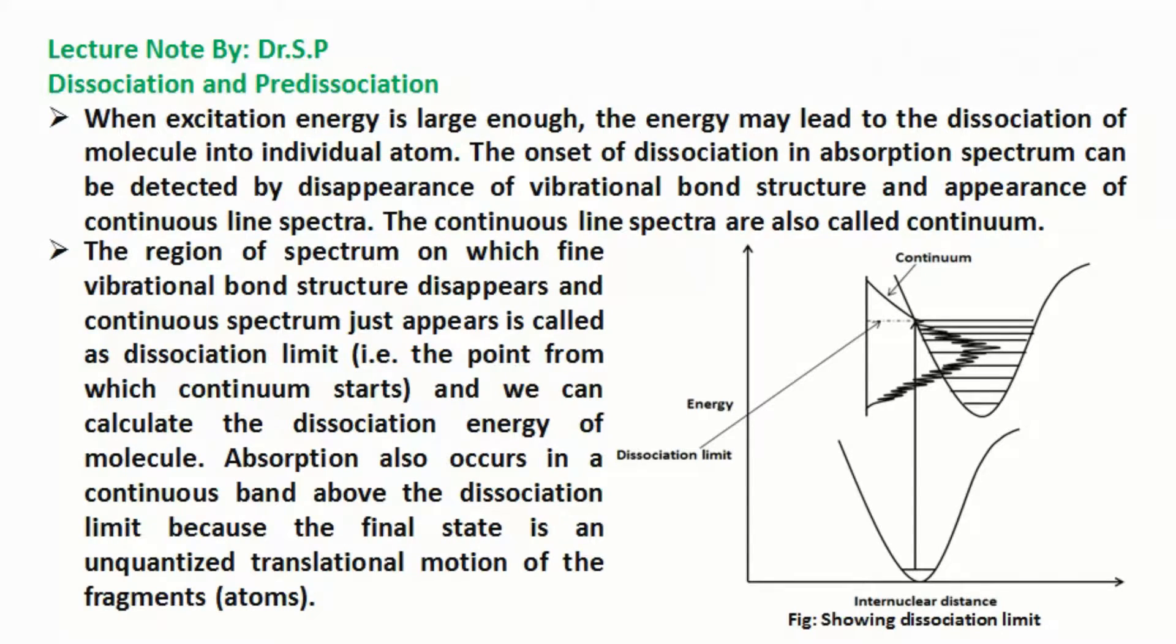The continuous line spectra are also called continuum. The region of spectrum on which fine vibrational bond structure disappears and continuous spectrum just appears is called the dissociation limit, that is the point from which continuum starts, and we can calculate the dissociation energy of molecule.